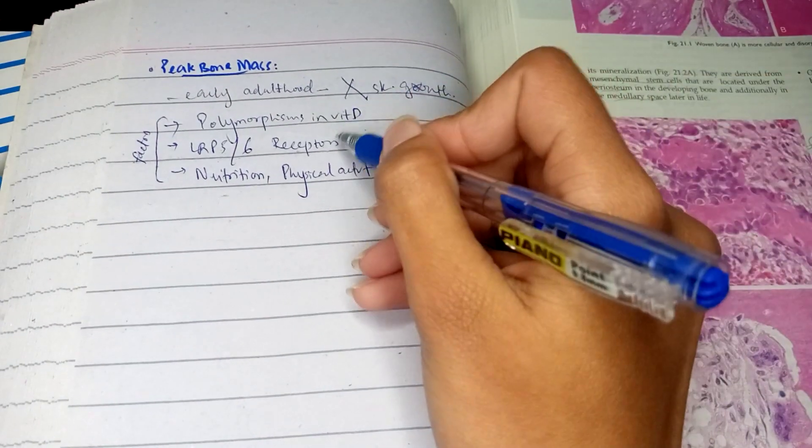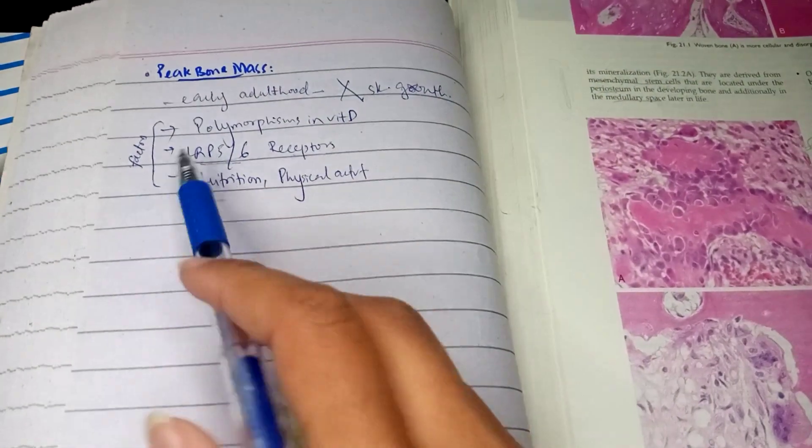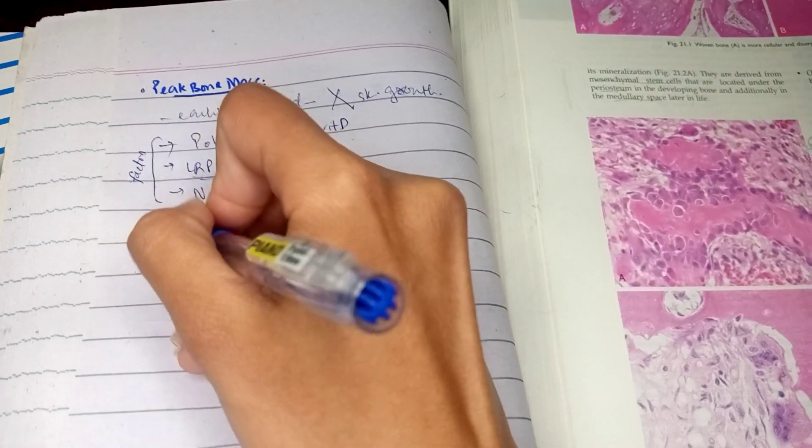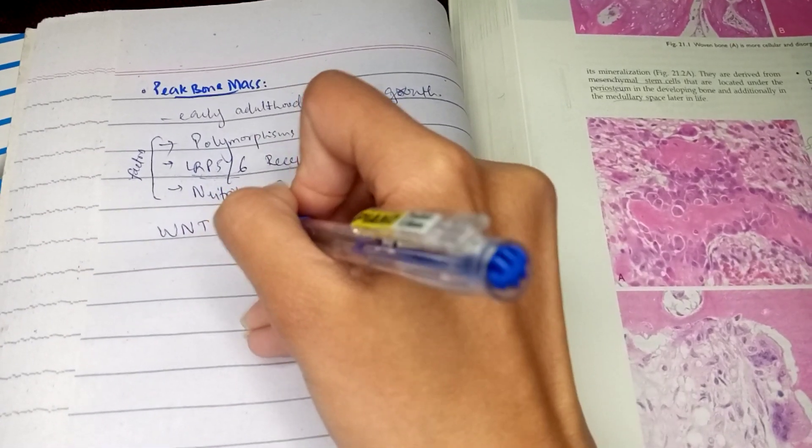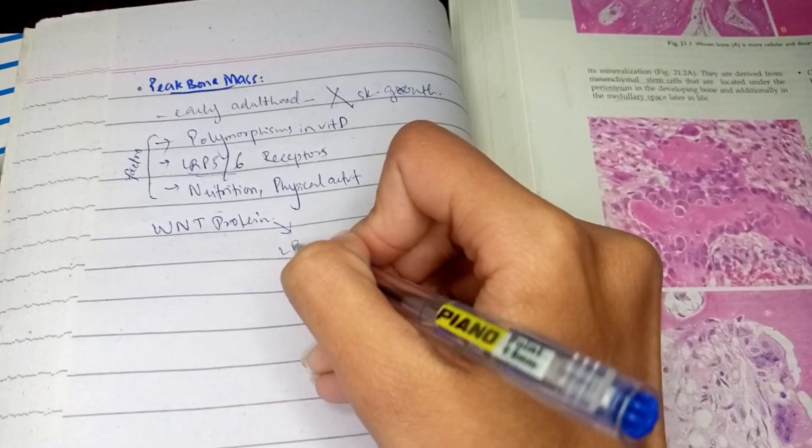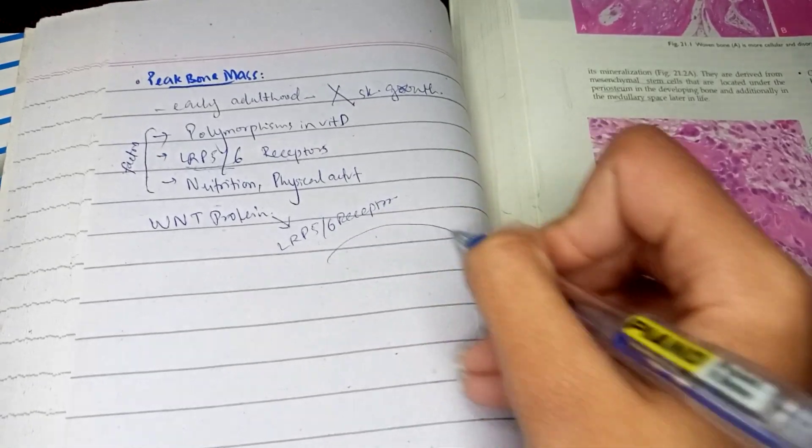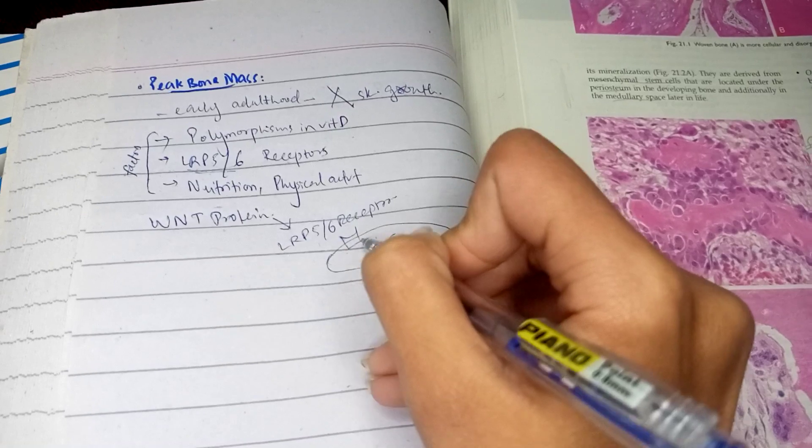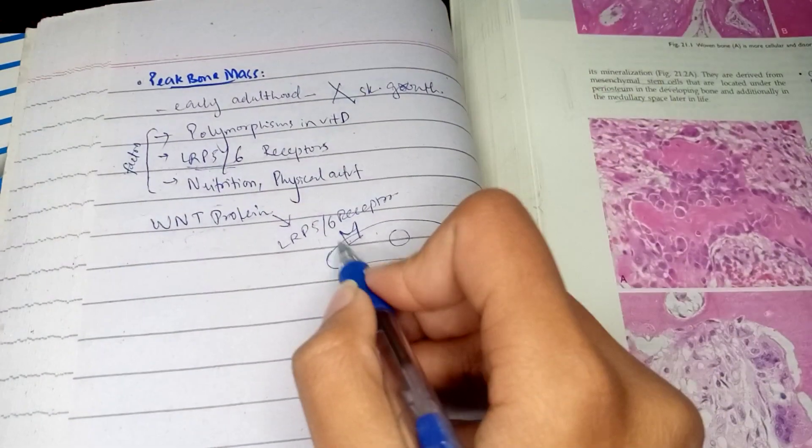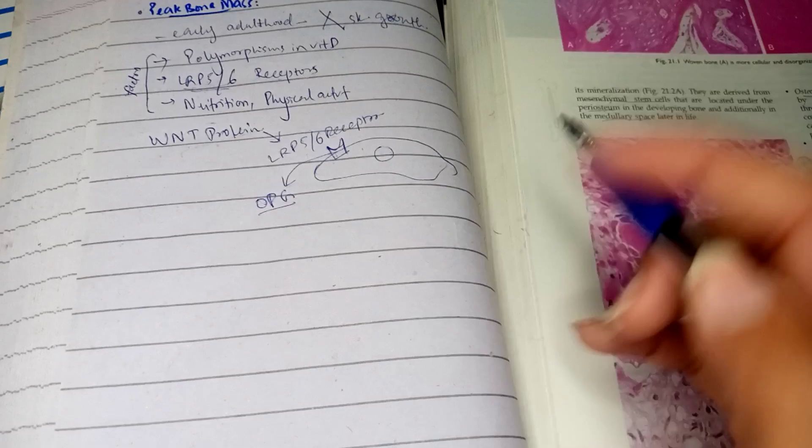Let me discuss these LRP5 and 6 receptors in detail. We have WNT protein which stimulates these LRP5 and 6 receptors. These receptors are present on osteoblastic cells. When WNT protein stimulates these receptors, this produces OPG, which is osteoprotegerin.